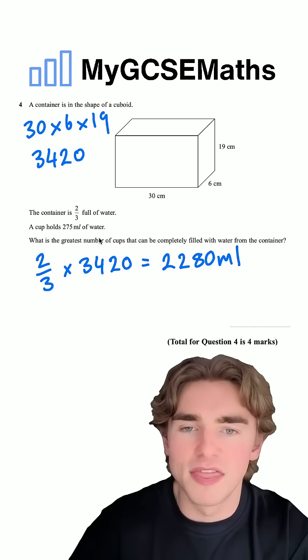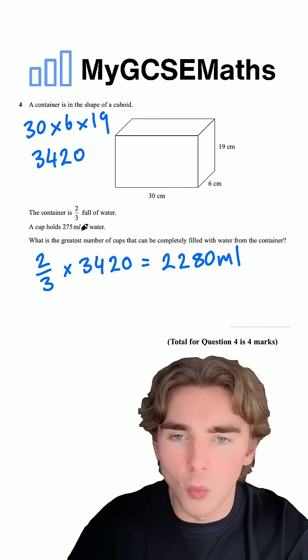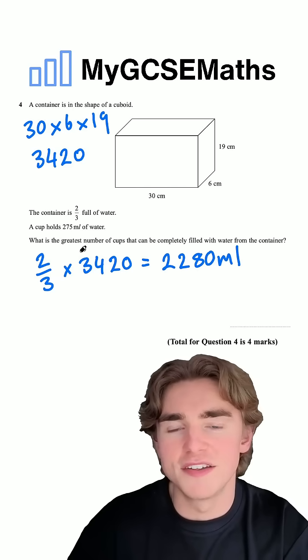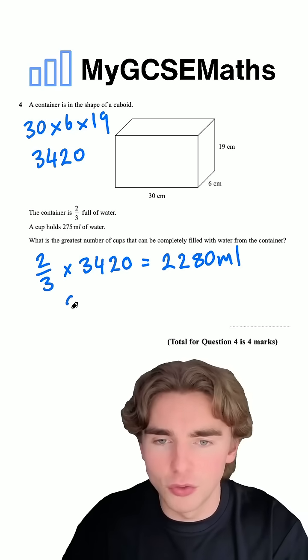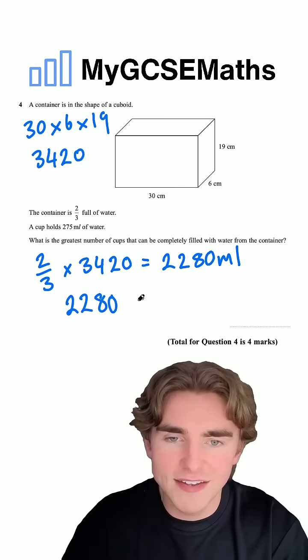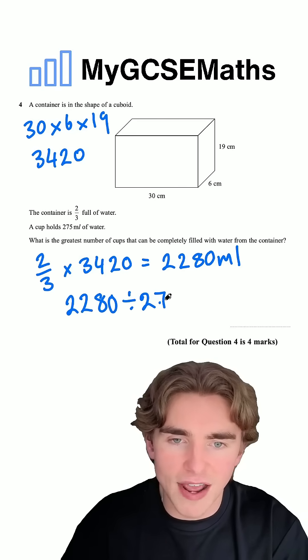Now, how can we work out the number that we can fill? Well, we're going to do this value here divided by 275. That's going to give us the number of times we can fill that cup. So 2,280 divided by 275.